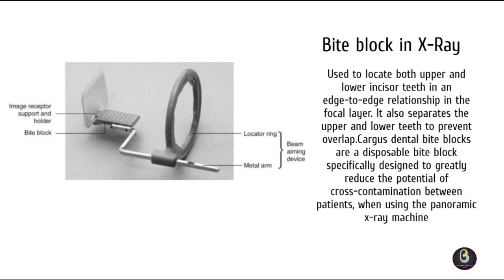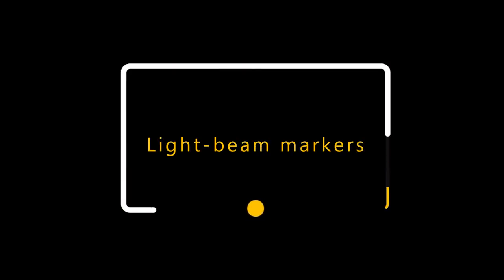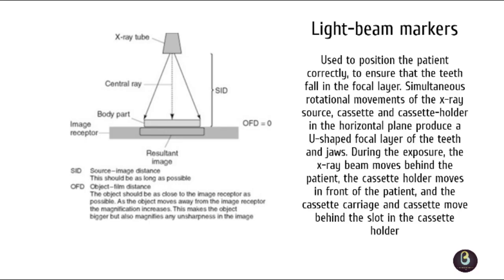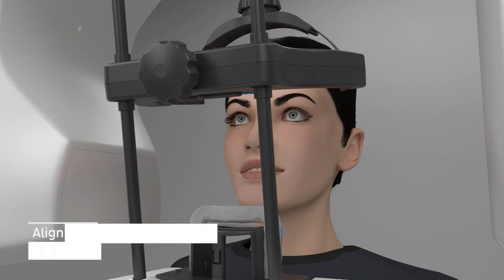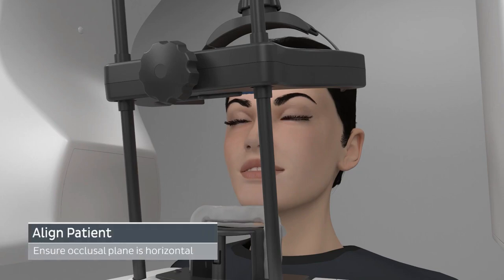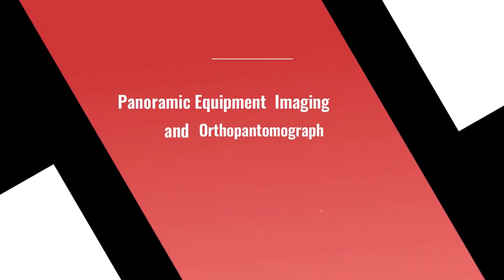Bite block: used to locate both upper and lower incisor teeth in an edge-to-edge relationship in the focal layer; it also separates the upper and lower teeth to prevent overlap. Light beam markers: used to position the patient correctly to ensure that the teeth fall in the focal layer. Head holding apparatus: allows the patient's head to be immobilized once accurately positioned. Handles minimize movement of the patient.